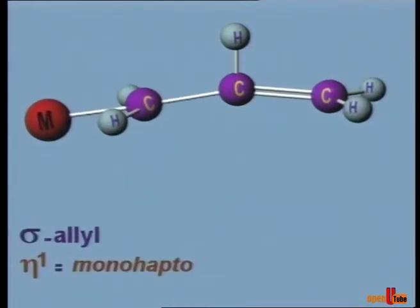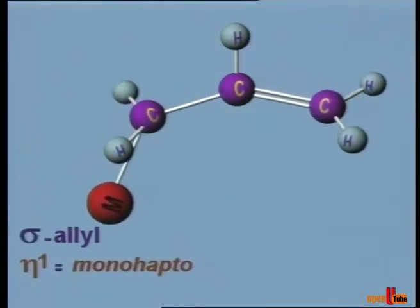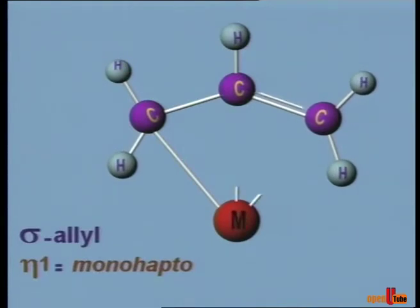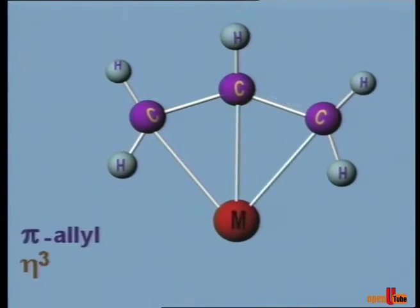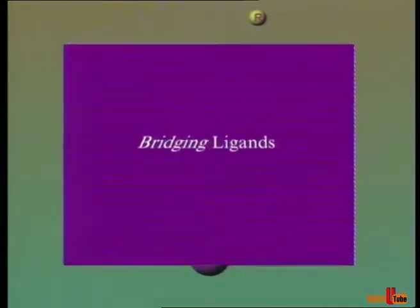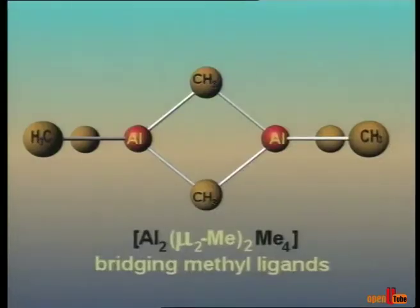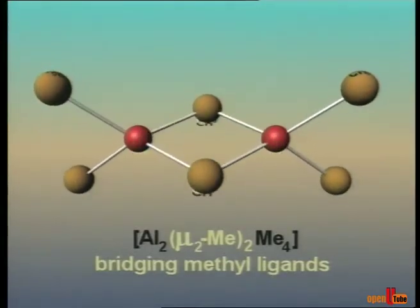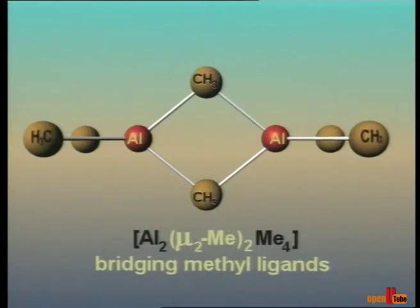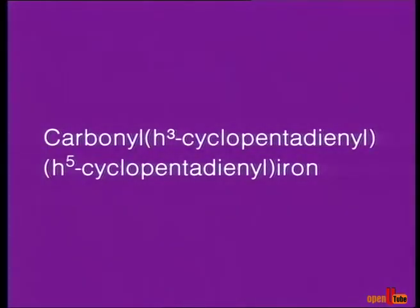Sigma allyl and pi allyl ligands are interconvertible to each other. Can you notice the methyl ligands which have created the bridge linking two aluminium atoms? Methyl is acting as a bridging ligand.